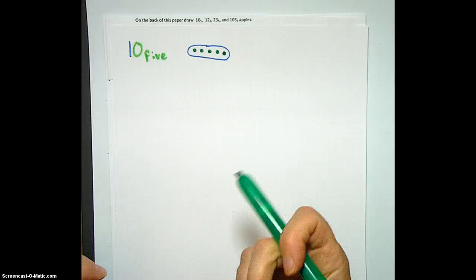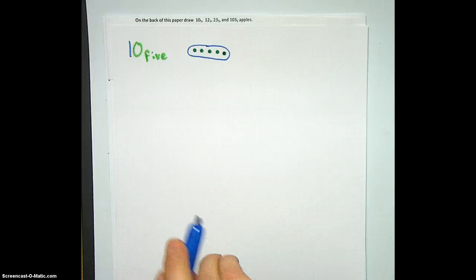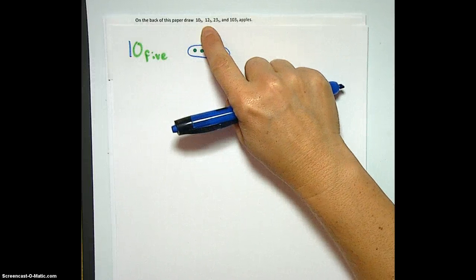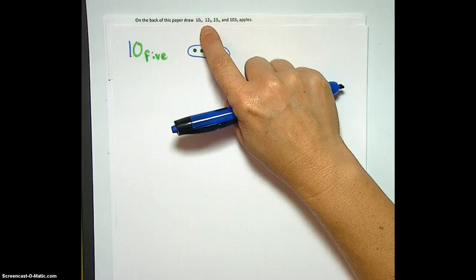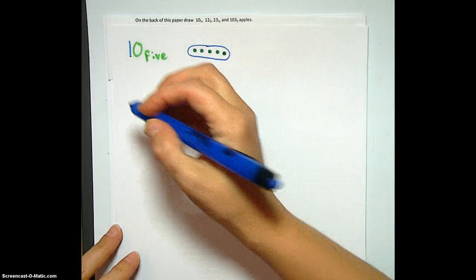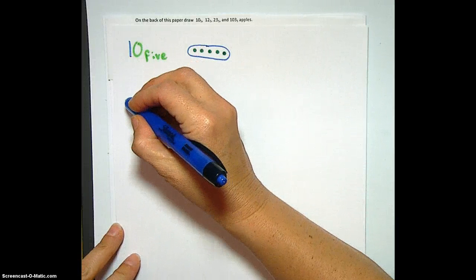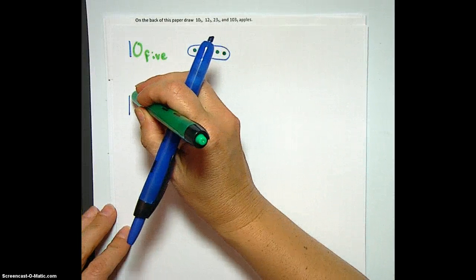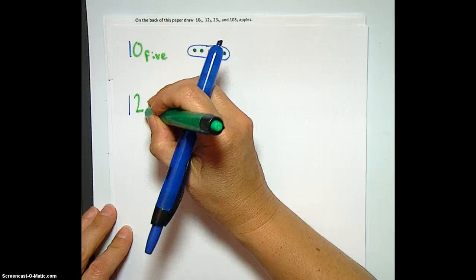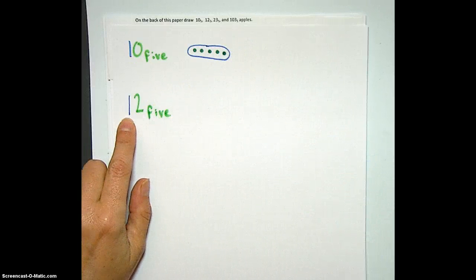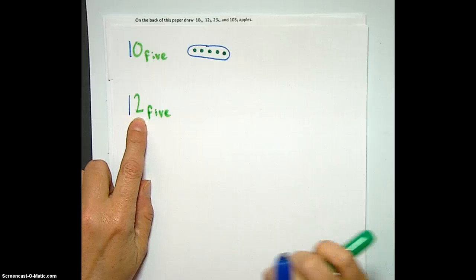12 base 5. What color should I use for the 1? I think you should use blue so that it matches up perfectly. Because the blue is our representation for the 5's place, not the 1's place, right? So here we are really digging apart at what place value means. The fact that the 1 is in this place in base 5 means that we have 1, 5, and the 2 in this place means that we have 2 units.